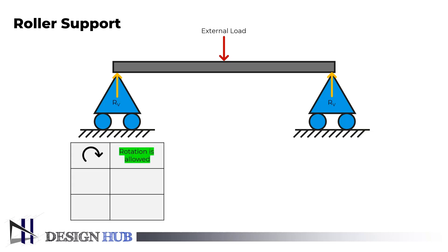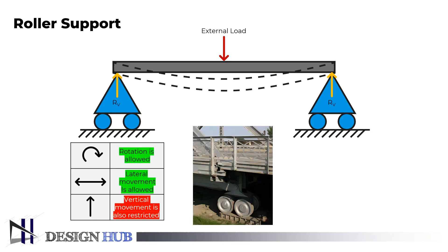Although this type of support permits rotation and lateral movement, it does not permit vertical movement. As a result, it responds to the applied force vertically. The moment at the roller support will be zero because it permits rotation. This is how a roller support is typically represented in mechanics. Large bridges typically have this type of support, which enables the bridge's thermal expansion and contraction.